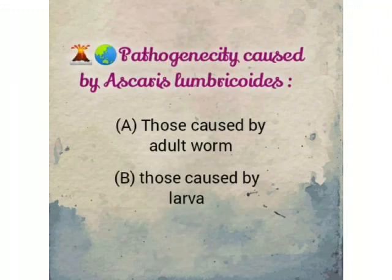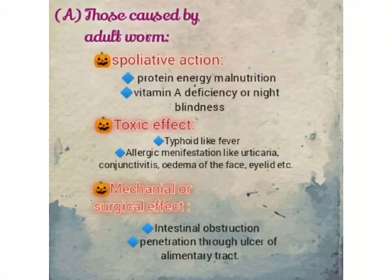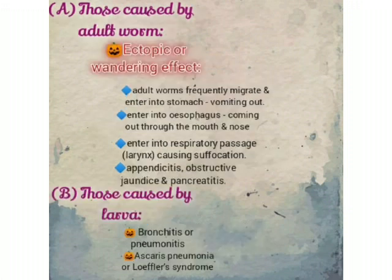Pathogenicity caused by Ascaris lumbricoides: those caused by adult worm include trauma, exploitative action, protein-energy malnutrition, vitamin A deficiency or night blindness, toxic effects such as typhoid-like fever, allergic manifestations like urticaria, conjunctivitis, edema of the face and eyelid, and mechanical or surgical effects such as intestinal obstruction and penetration through ulcers of the alimentary tract.